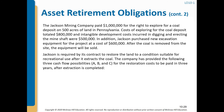Here is an example. The Jackson Mining Company paid $1 million for the right to explore for a coal deposit on 500 acres of land in Pennsylvania. Costs of exploring for the coal deposit totaled $800,000, and intangible development costs incurred in digging and erecting the mine shaft were $500,000. Jackson purchased new excavation equipment for the project at a cost of $600,000. After the coal is removed from the site, the equipment will be sold. Jackson is required by its contract to restore the land to a condition suitable for recreational use after it extracts the coal.